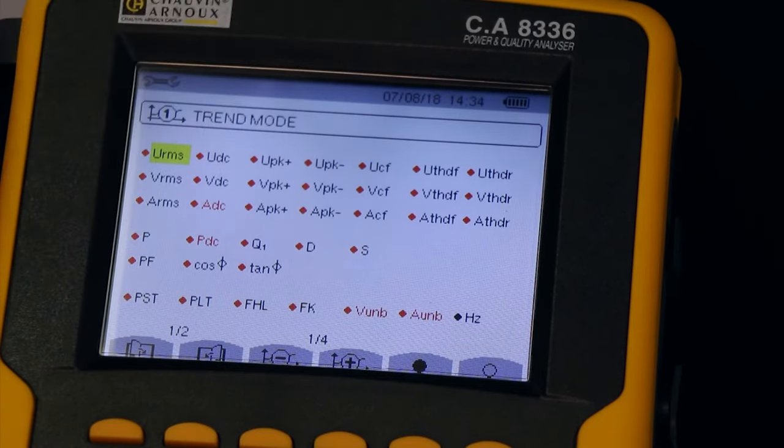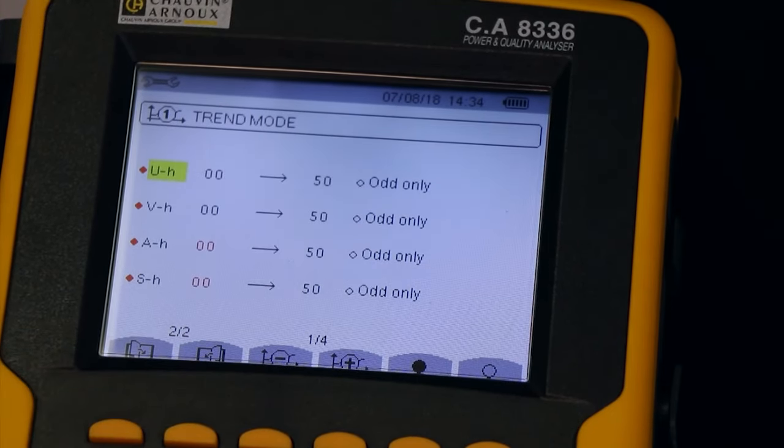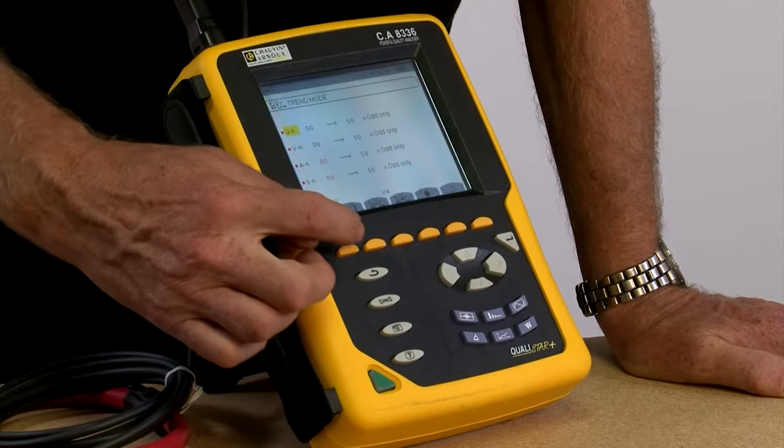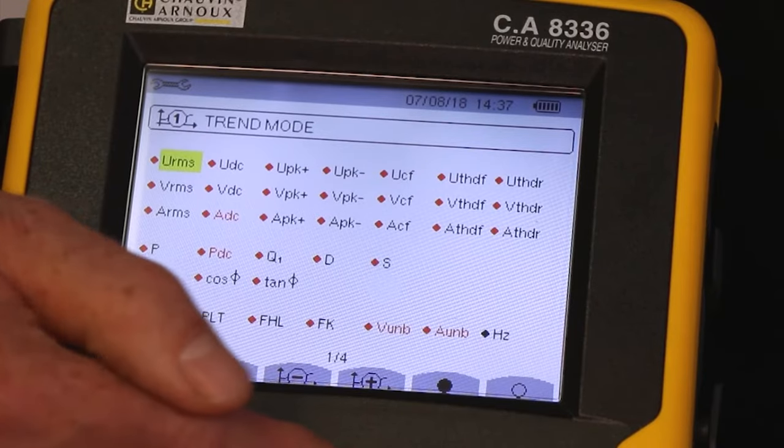And there are two pages of parameters for each trend. So this is page 1, and with the fast key, we can go to page 2, and back to page 1. There are four trend modes that can be configured to measure the parameters I want.